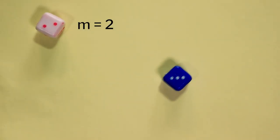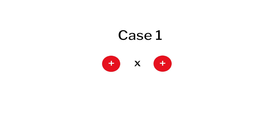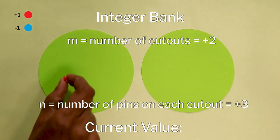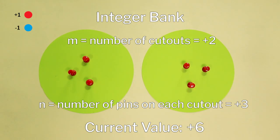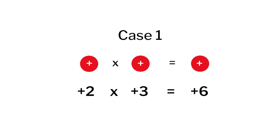Roll the dice — we have got 2 and 3, and we multiply 2 and 3 in each of the four cases. In the first case, let us take both of them to be positive, that is positive 2 multiplied by positive 3. We take a blank sheet and call it the integer bank — blank means the value is 0. Take two cutouts and attach three red pins on each of them. Count the pins to get your answer; of course it is 6. So the total value of your integer bank is 6. Ask students to note down the sign of the multiplicand, multiplier, and product or answer — positive into positive gives a positive. That was really very easy for the students.